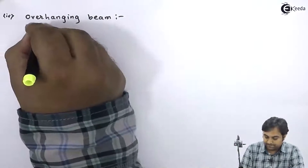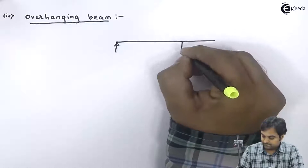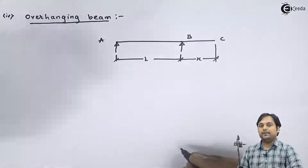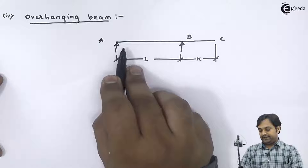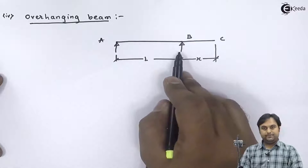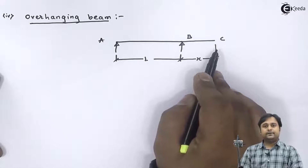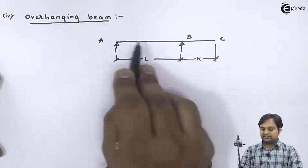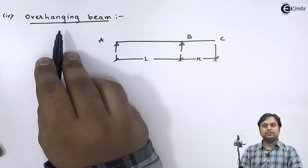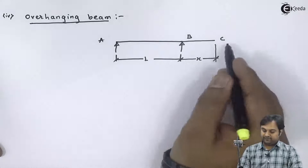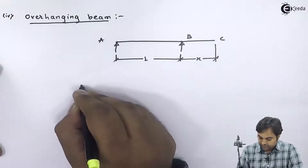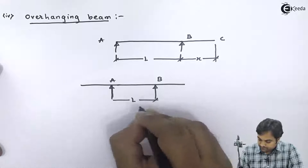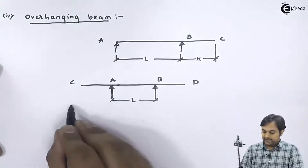Next is the overhanging beam. If we have a beam which is supported at point A and point B, and the BC portion of the beam is hanging — the total length is L plus X, where only the L portion is supported and the X portion is hanging — that is called an overhanging beam. It can hang from one side or from both sides.